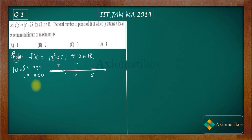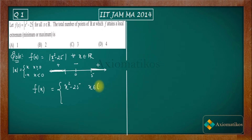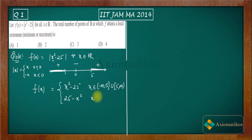Now we can define f(x) piecewise: f(x) = x² - 25 when x belongs to (-∞, -5] ∪ [5, ∞), and f(x) = 25 - x² when x belongs to the open interval (-5, 5).